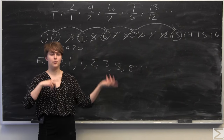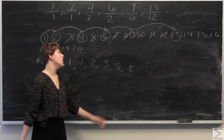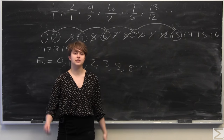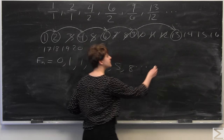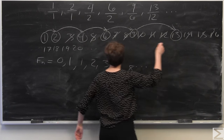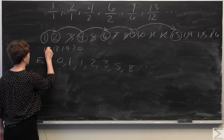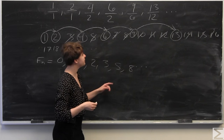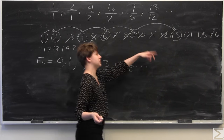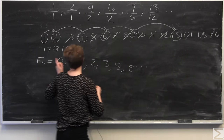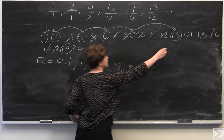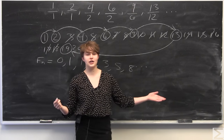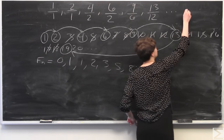So the number of integers we're skipping increases following the Fibonacci sequence: skip 0, skip 1, skip 1, skip 2, skip 3. The next Fibonacci number is 5, so we need to skip 5 integers from 13: 14, 15, 16, 17, 18, 19. That means 13 goes to 19, and the next numerator is going to be 19.